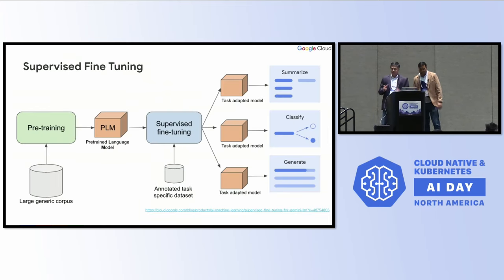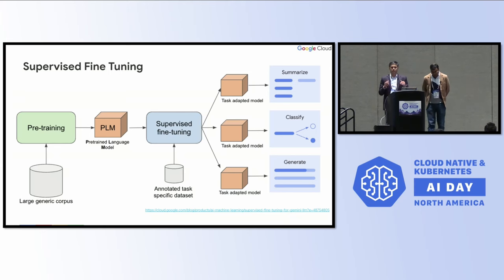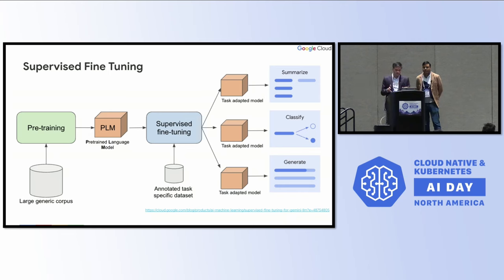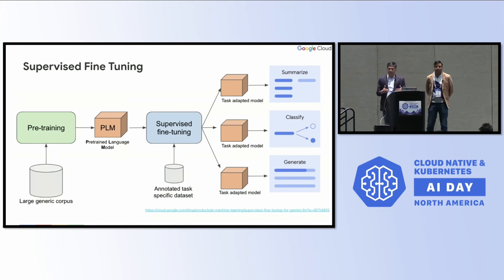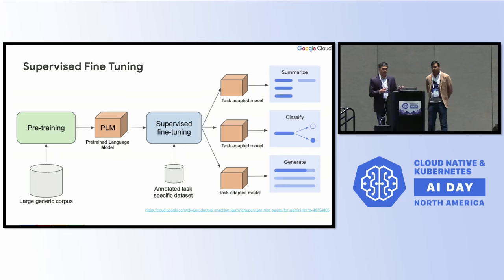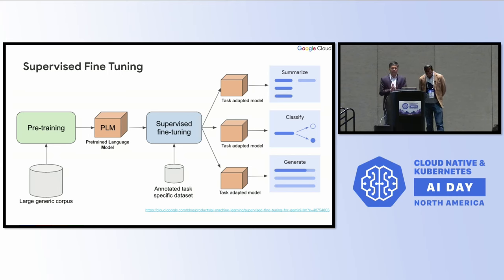For enterprises that have the skills and money to sponsor fine-tuning efforts, you start with a pre-trained model — one with generic language and reasoning capabilities. With that, you use supervised fine tuning: you bring in a lot of labeled enterprise data and fine tune the model. There are two options: PEFT and full fine tuning. Full fine tuning is even more expensive and complex to train and run.